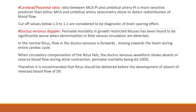In the ductus venosus Doppler study, perinatal mortality in growth-restricted fetuses is significantly worse when abnormalities in fetal venous circulation are detected. In a normal fetus, flow in the ductus venosus is forward, moving towards the heart during the entire cardiac cycle. When there is circulatory decompensation, ductus venosus waveforms show absent or reversed blood flow during atrial contraction, and perinatal mortality rises to 63 to 100%. It is therefore recommended that delivery occur before the development of absent or reversed blood flow in the ductus venosus.